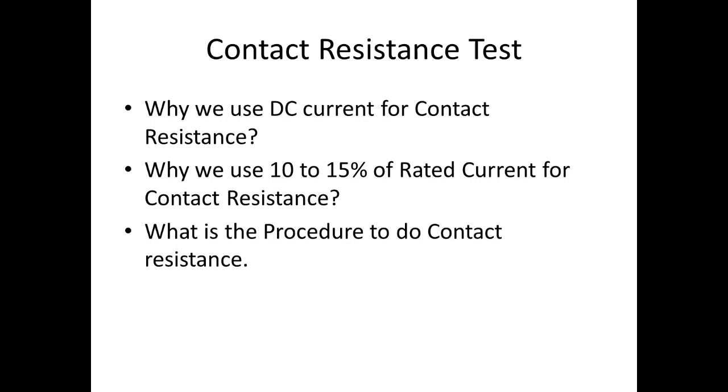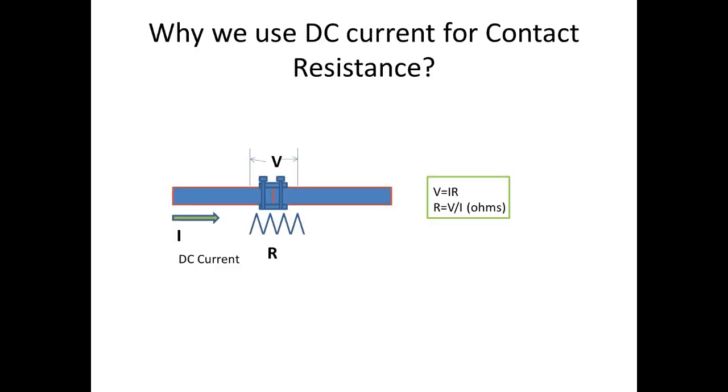First, we'll see why we use DC current for contact resistance. If you use AC current for finding contact resistance, then you have to find the RMS value for AC.